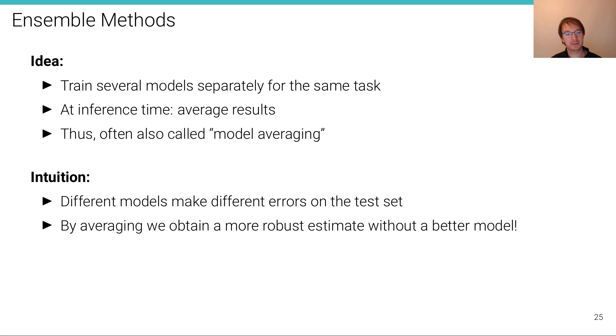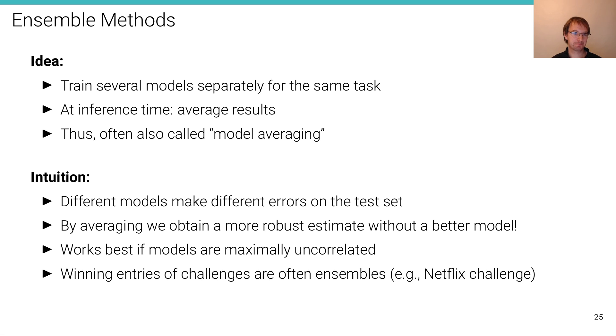For instance, by starting with different random initializations and doing stochastic gradient descent five times for the same model, we obtain five slightly different predictors which we can then average in the end. This works best if the models are maximally uncorrelated. And the winning entries of most bigger challenges or benchmarks are actually often ensembles, for instance in the case of the Netflix challenge.